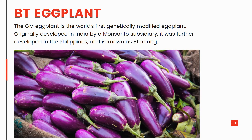The GM eggplant is the world's first genetically modified eggplant, originally developed in India by a Monsanto subsidiary. It was further developed in the Philippines and is known as BT Talong — the Filipino word for eggplant.